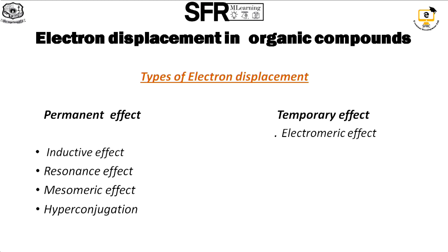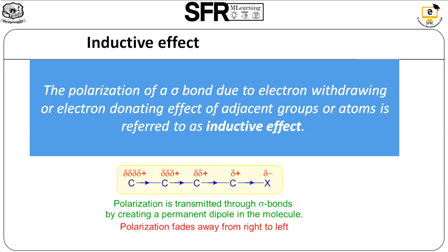Electromeric effect is an example of a temporary effect. Inductive effect is the induction of polarity — otherwise a non-polar compound becomes a polar compound. The polarization is transmitted through the sigma bond by creating a permanent dipole in the molecule.